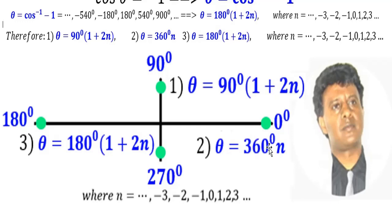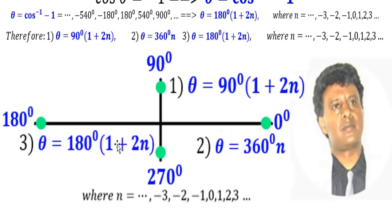The second solution is 0 degrees and 360 degrees and they are co-terminals. When n is 0 it is 0 degrees, when n is 1 it is 360, when n is 2 it is 720, and so on. The third solution is the quadrantal angle 180 degrees and all its co-terminals, written as theta equals 180 degrees times (1 plus 2n). When n is 0 it is 180 degrees, when n is 1 it is 540, and so on.